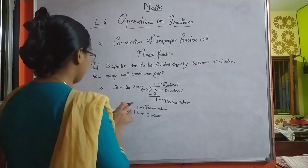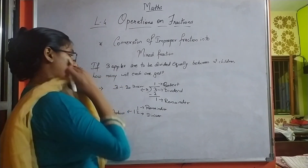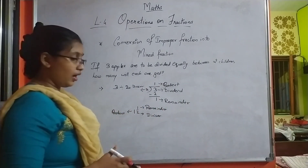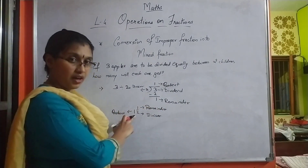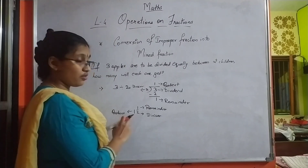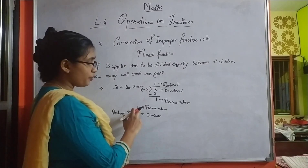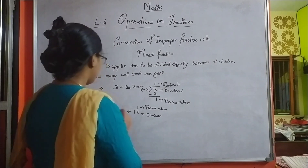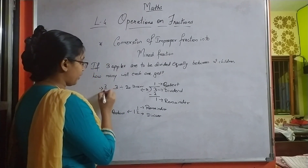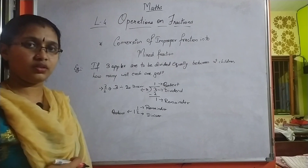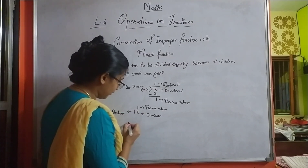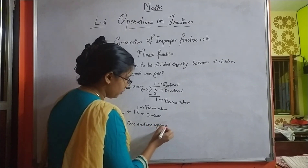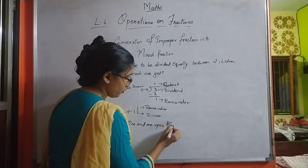So how to convert an improper fraction into a mixed fraction? We have to divide it. We will get a remainder, quotient, dividend, and divisor. The quotient will be our integral number, the remainder will be our numerator, and the divisor will be our denominator. When we write three upon two in mixed fraction form, it is read as 1 and 1 upon 2.